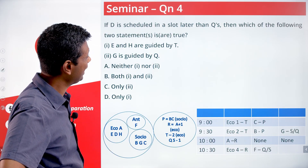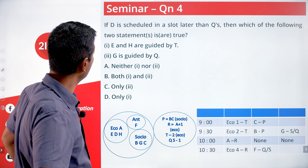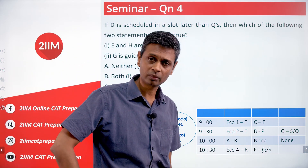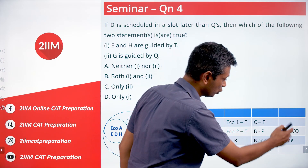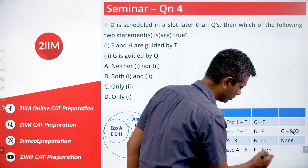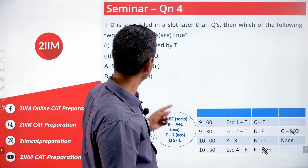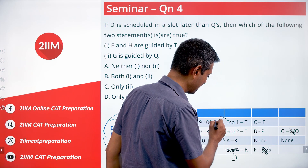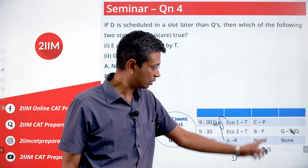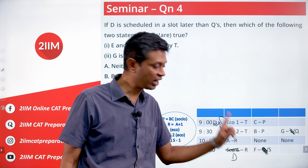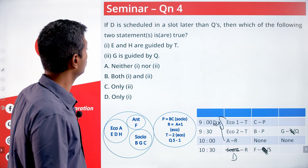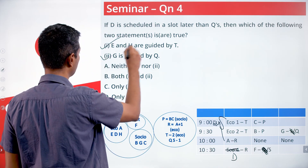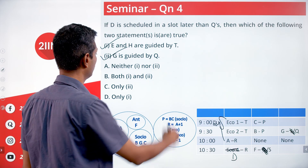If D is scheduled in a slot later than Q's student, then this economics slot cannot be Q. That means the 10:30 slot is Q and the 9:30 slot is S — so F is guided by S and G is guided by Q. D is scheduled later than Q's student G, meaning D goes in the 10:30 slot. E and H go in slots one and two in some order. G is guided by Q, F by S, D by R. E and H are guided by T — both statements are true.